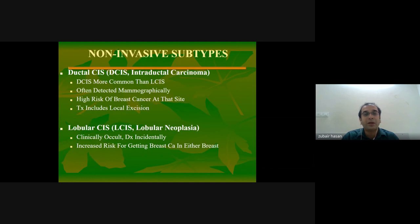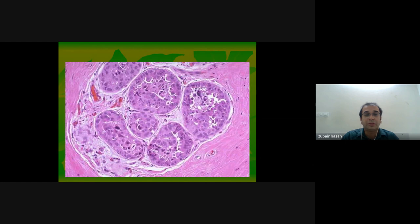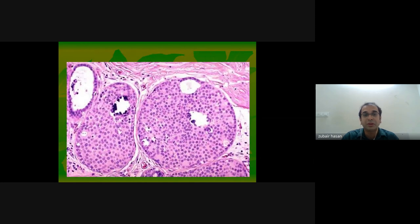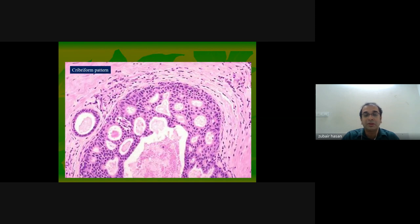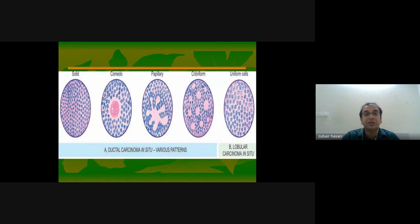The non-invasive cancers include ductal carcinoma in situ (DCIS) and lobular carcinoma in situ. DCIS shows a uniform cookie-cutter pattern. The different patterns of DCIS include solid, comedo, papillary, cribriform, and uniform patterns.